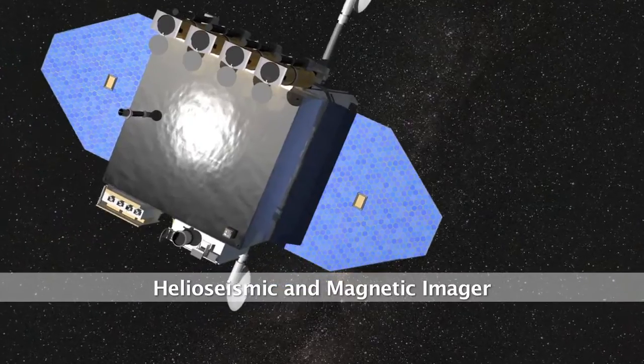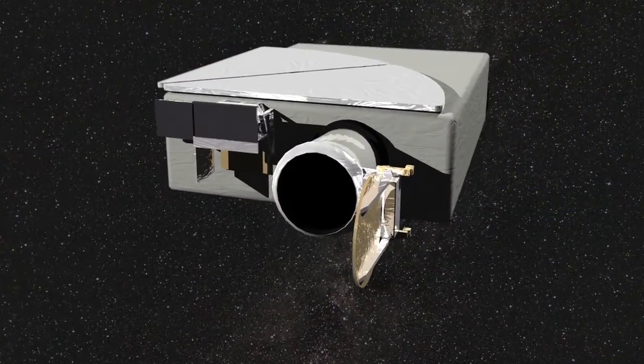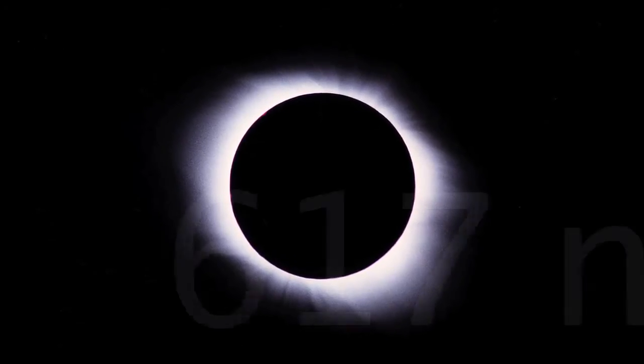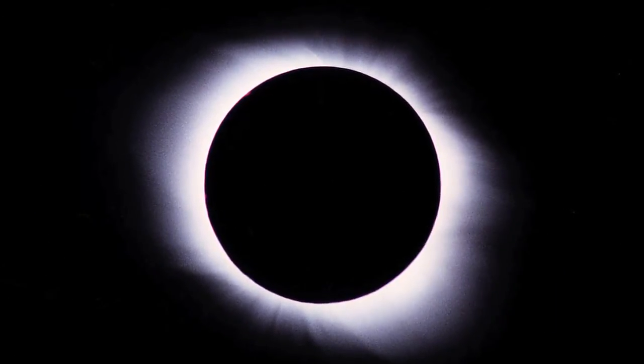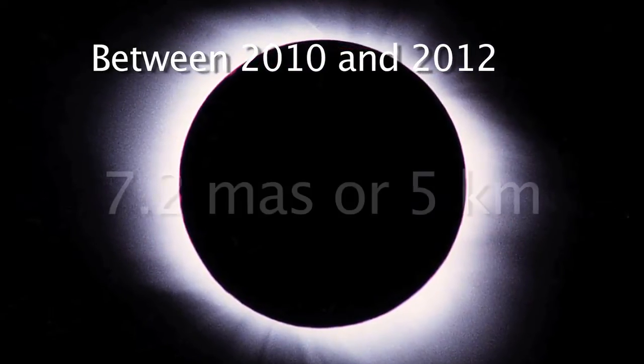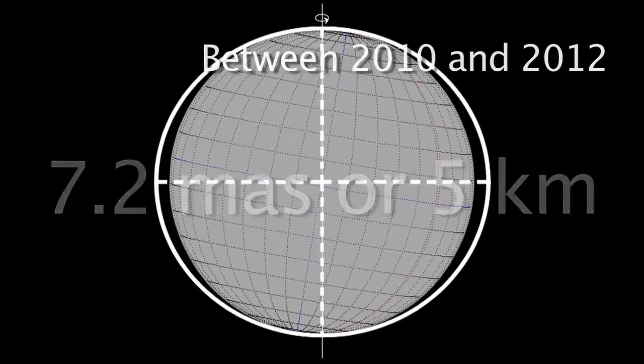Then, the HMI instrument of the SDO space mission. This is an imager stemmed from the NASA experience, which consists of observing the solar limb at a wavelength of 617 nm. The measures obtained for the solar oblateness during the period between 2010 and 2012 are of 7.2 milliarcseconds, with an error of 0.5 milliarcseconds.